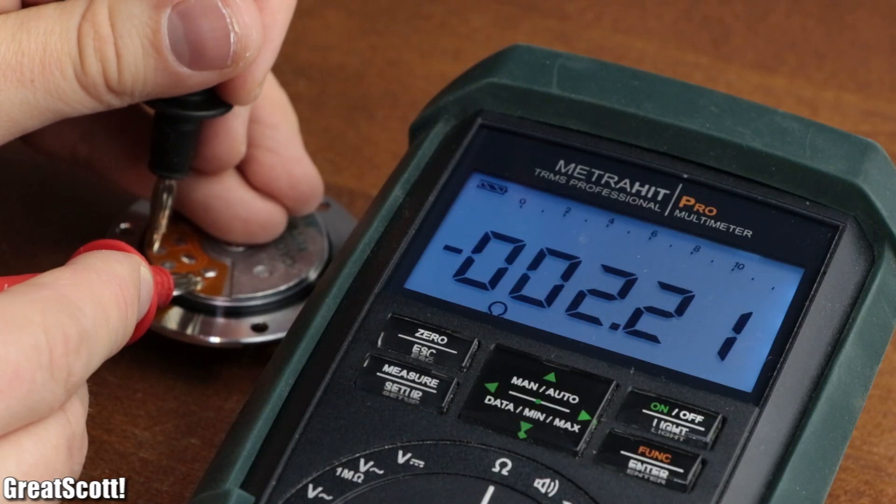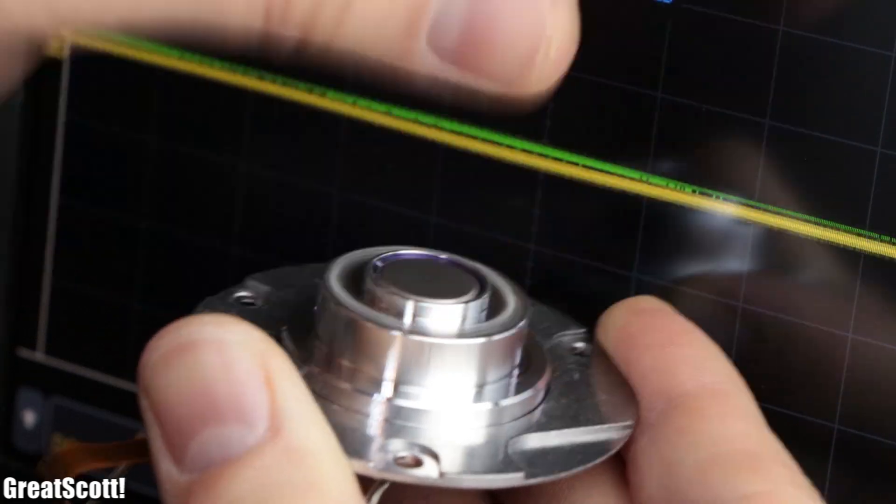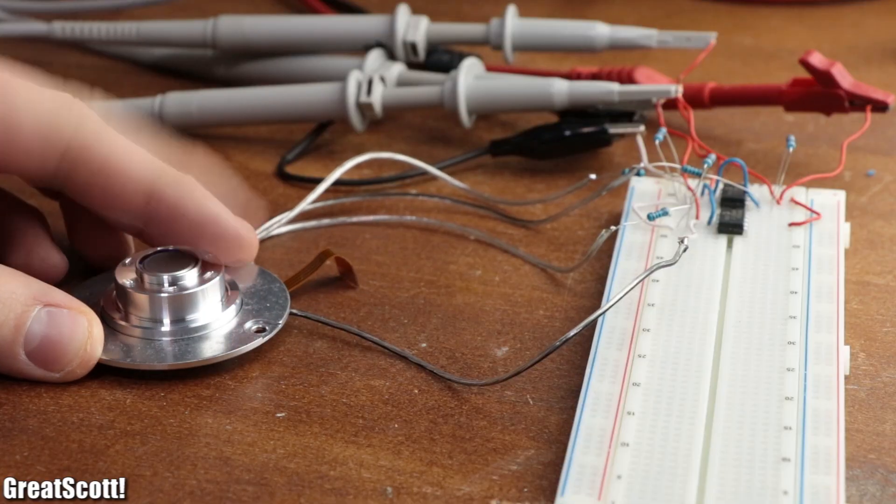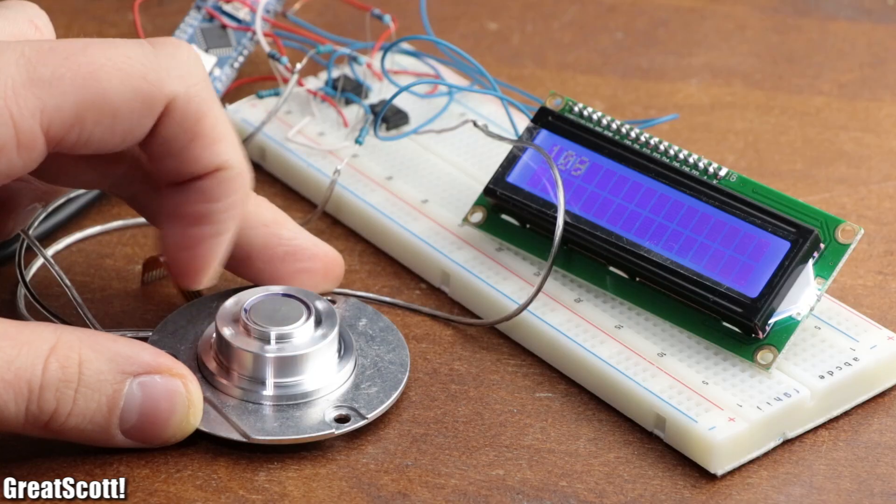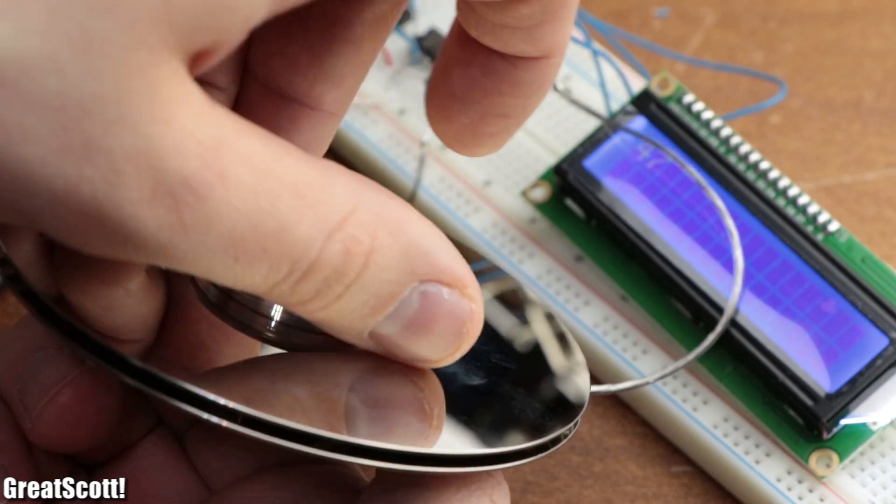So in this video we will find out how hard drive motors work and in which way it is possible to reuse them as rotary encoders. Let's get started.